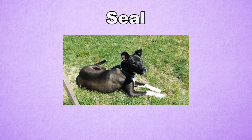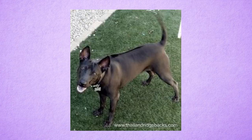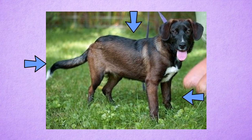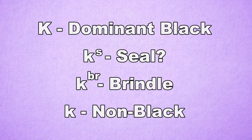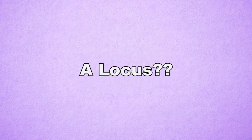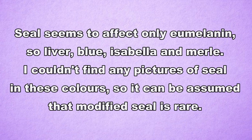Before I move on to the A-locus, there are a few things I would like to point out. There is a color called seal that is a mystery — geneticists have not figured out exactly how seal works. Seal makes a black dog appear brown with the nose remaining black, and can vary from a slight brown to a liver coloring, but seals always have a black strip down their back and their legs and tails are generally darker. It is unknown which locus is responsible for seal. Some theories say seal is an allele in the K-locus, recessive to dominant black but dominant to brindle, or is a faulty gene. Some say it is an allele in the A-locus or a modifier of an unknown locus. It can also be combined with liver, blue, Isabella, and merle.